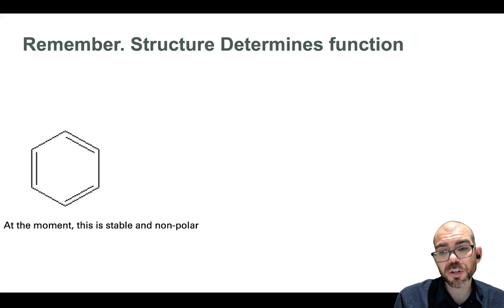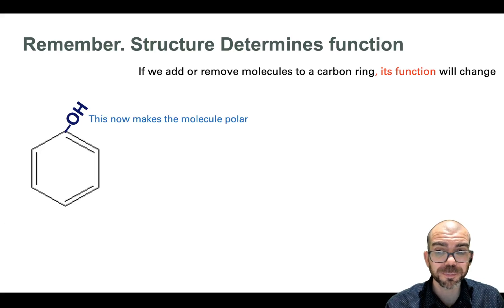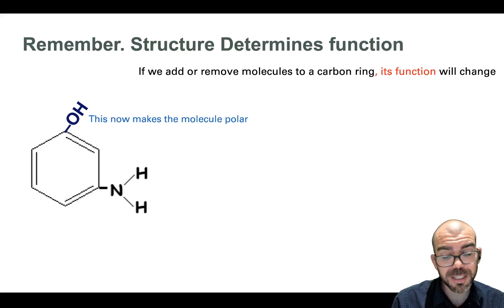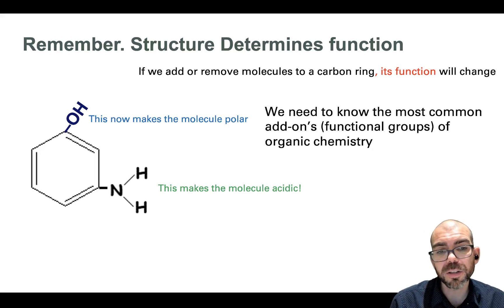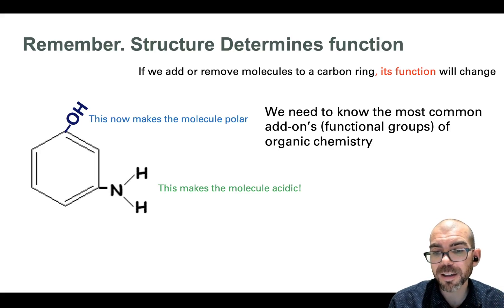So remembering that structure determines function. Here I have a carbon ring. It's stable, it's nonpolar, it's just carbons and hydrogens. Well, if I change the structure a little bit, let's say I were to add a hydroxyl group to it, that's going to change the molecule's function. Now this ring that was once nonpolar is polar because the hydroxyl group made it so. Same thing if I were to add an amine group. If I were to add an NH2, that'll actually make the molecule acidic. So it's essential that we're aware of what all these different changes are. We need to know what these molecular add-ons are, referred to as functional groups of organic chemistry, so that if we see them added to a molecule in biology, we know what difference in the function it will cause.